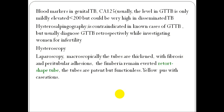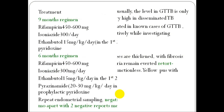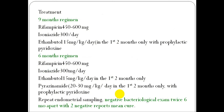Hysterosalpingogram is performed in cases of suspected genital TB. Hysteroscopy and laparoscopy reveal that macroscopically the tubes are thick with fibrous tissue and peritubal adhesions. Tubes may be patent but functionally impaired. Yellow caseous material is typically found, and histopathology is most reliable for AFB with spot diagnosis.